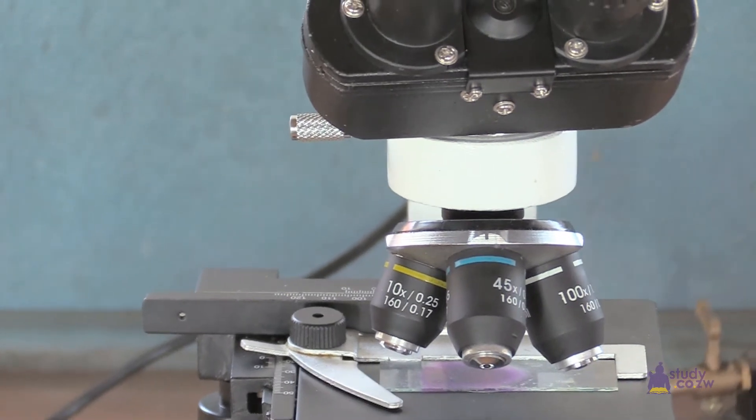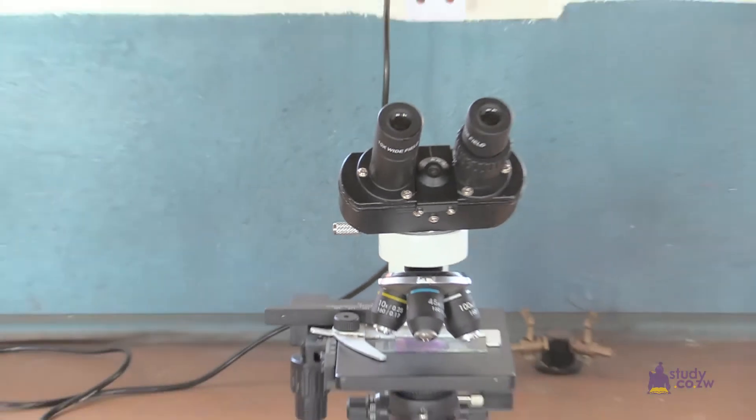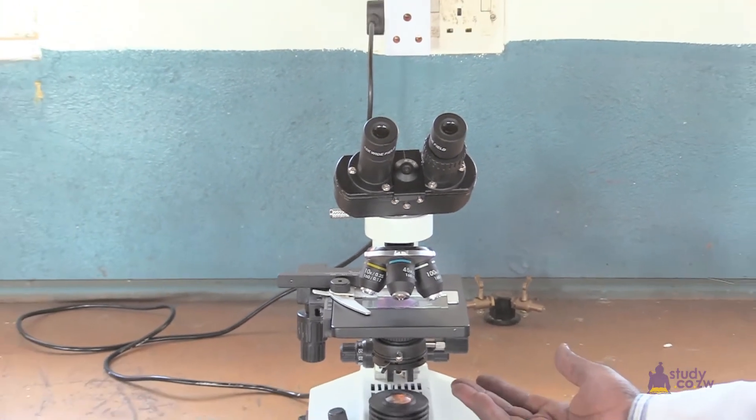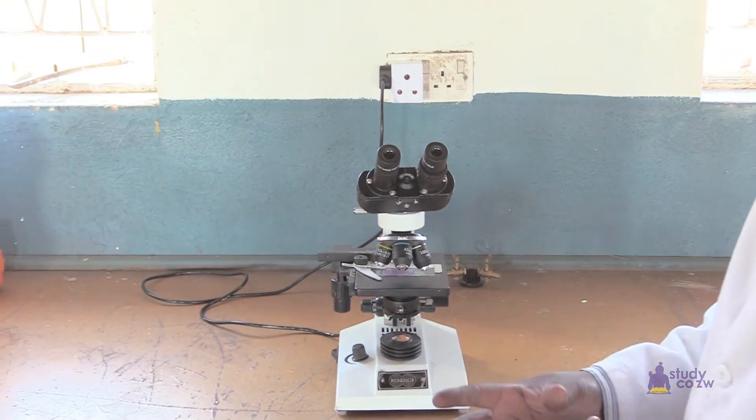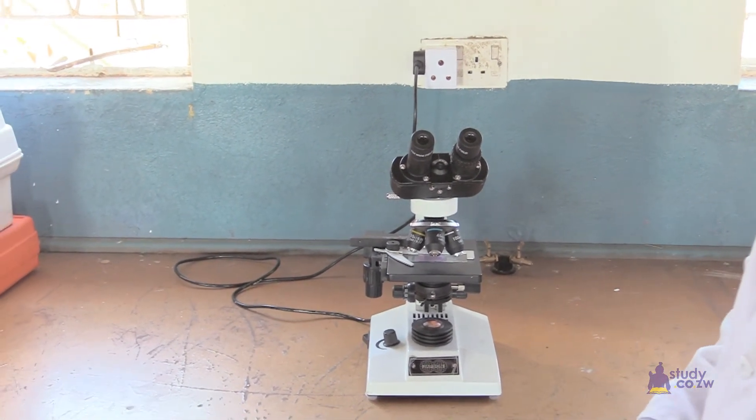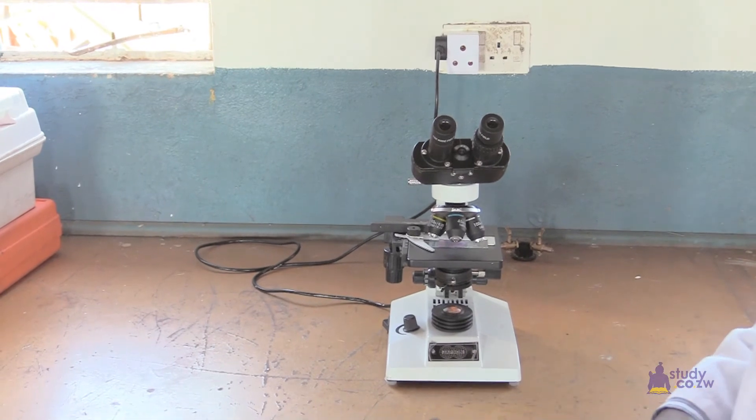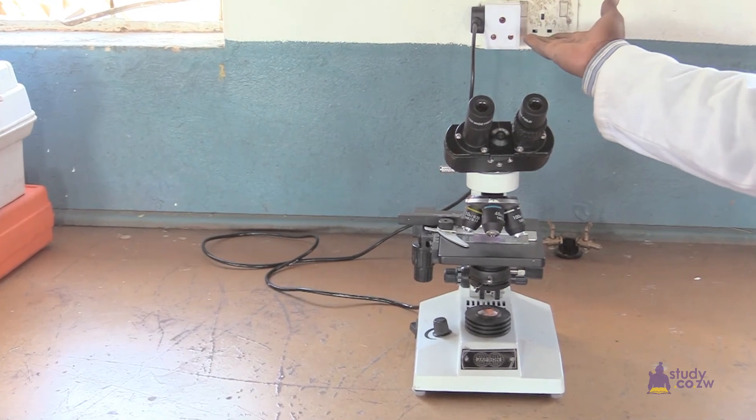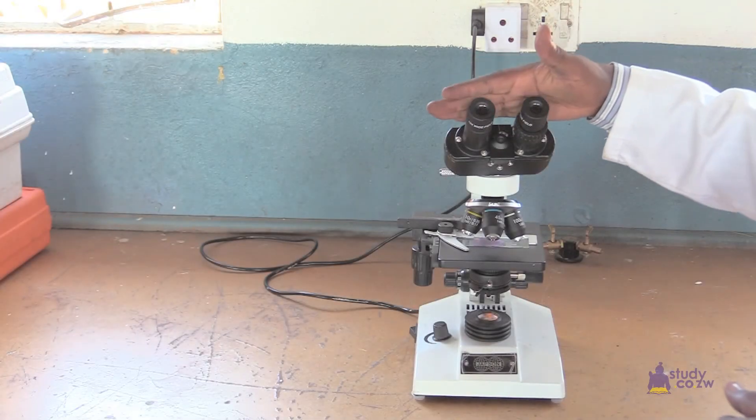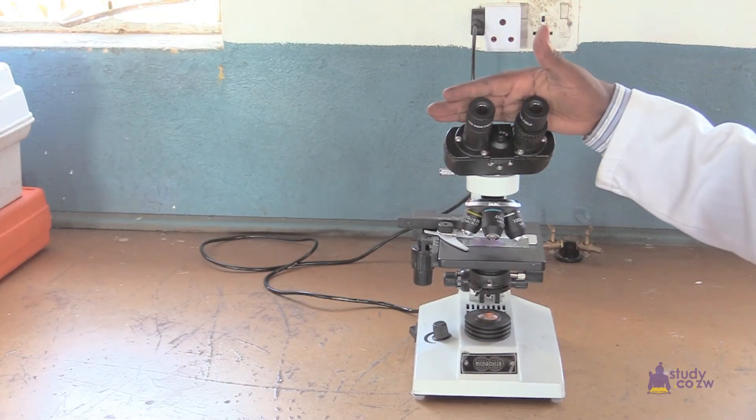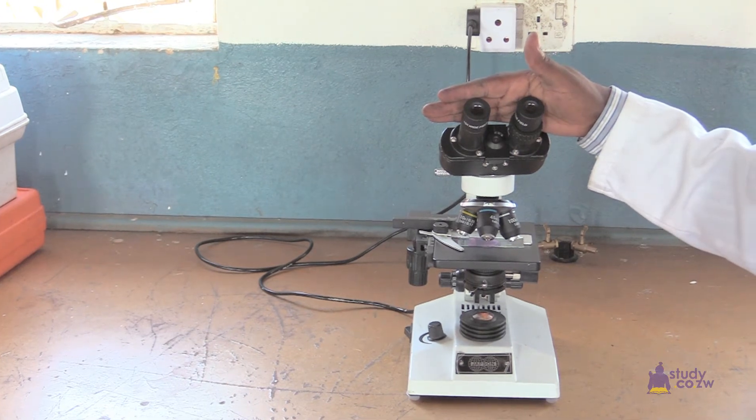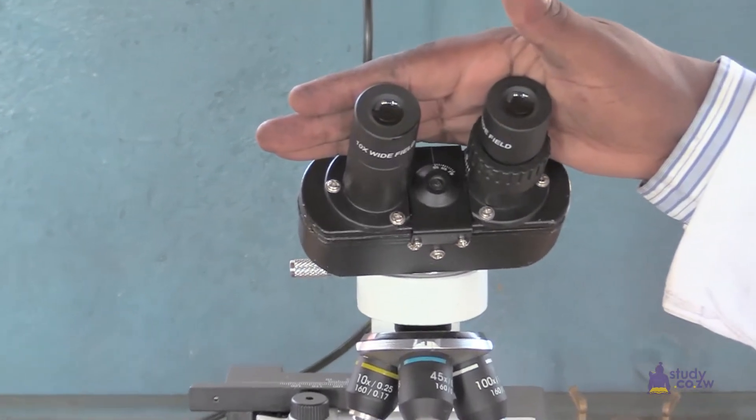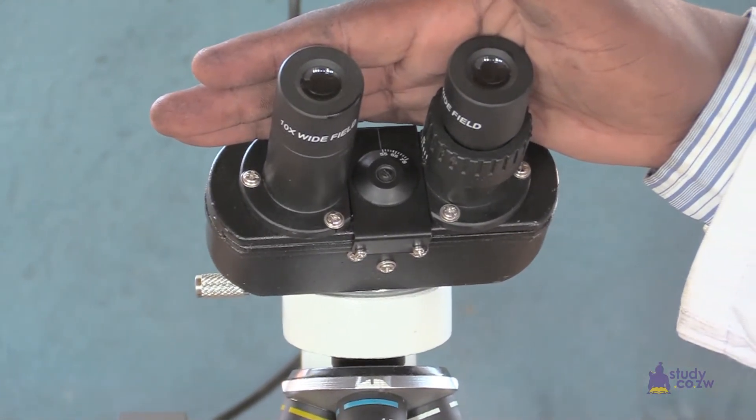There is a light, so this is called a light microscope because it uses light. There are other types of microscopes like the electron microscope which uses a beam of electrons. So this one is a light microscope which uses light, and the source for light here is electricity. These are the eyepieces. So this one has two eyepieces, so it is normally called a binocular microscope.